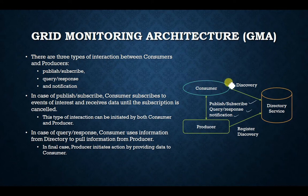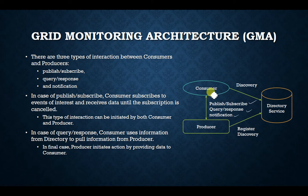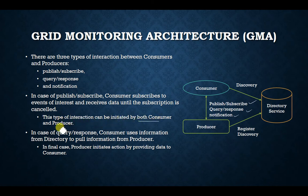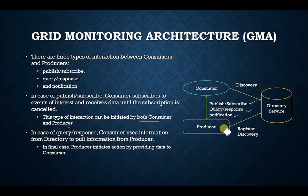When a consumer wants to monitor a component in the grid environment, they register with the producer. The producer then provides all the information about that system for which the consumer is registered. Once the subscription is over, the data movement from producer to consumer stops. This interaction can be initiated by both consumer and producer — if the consumer wants a service, they register in the directory service; if the producer wants to announce something, they also register.